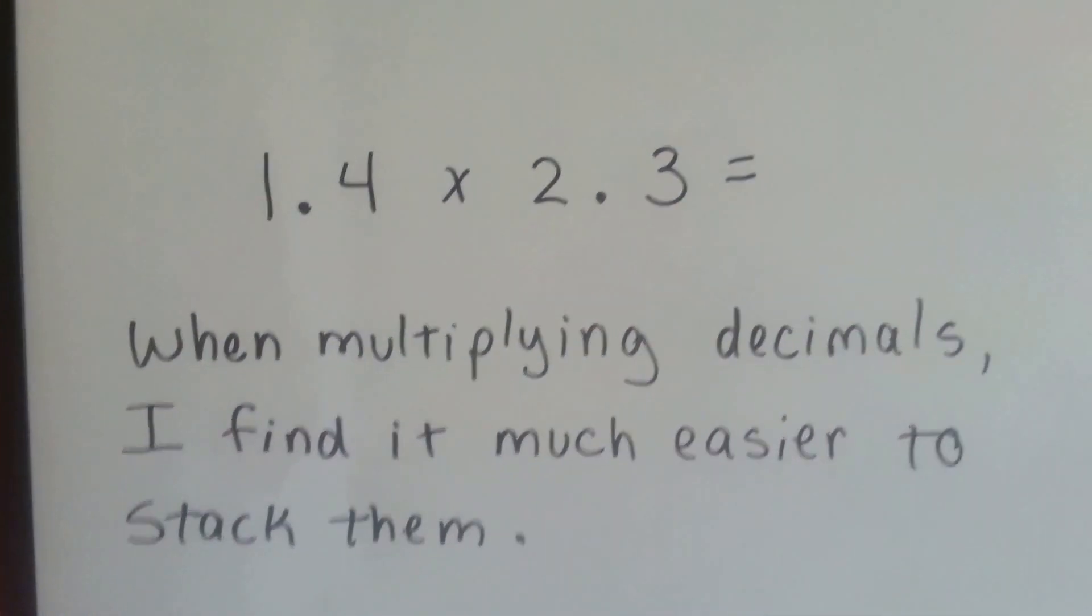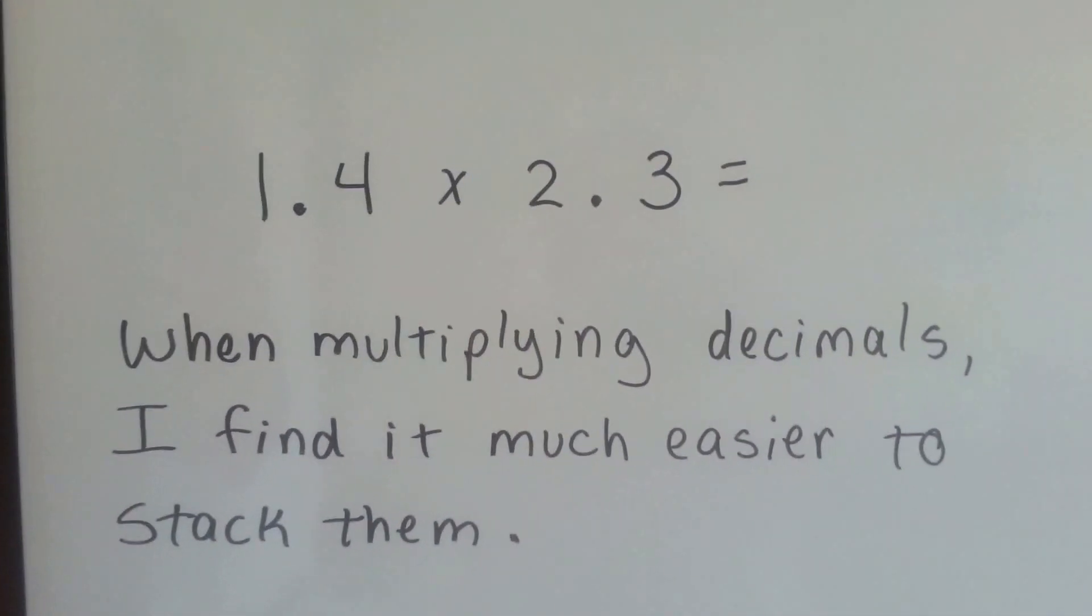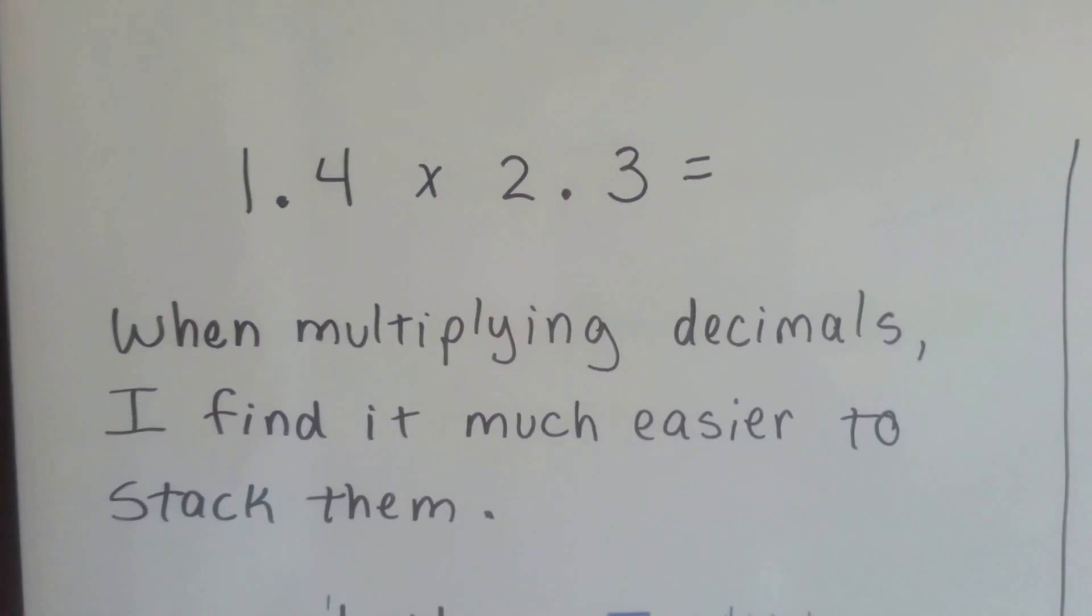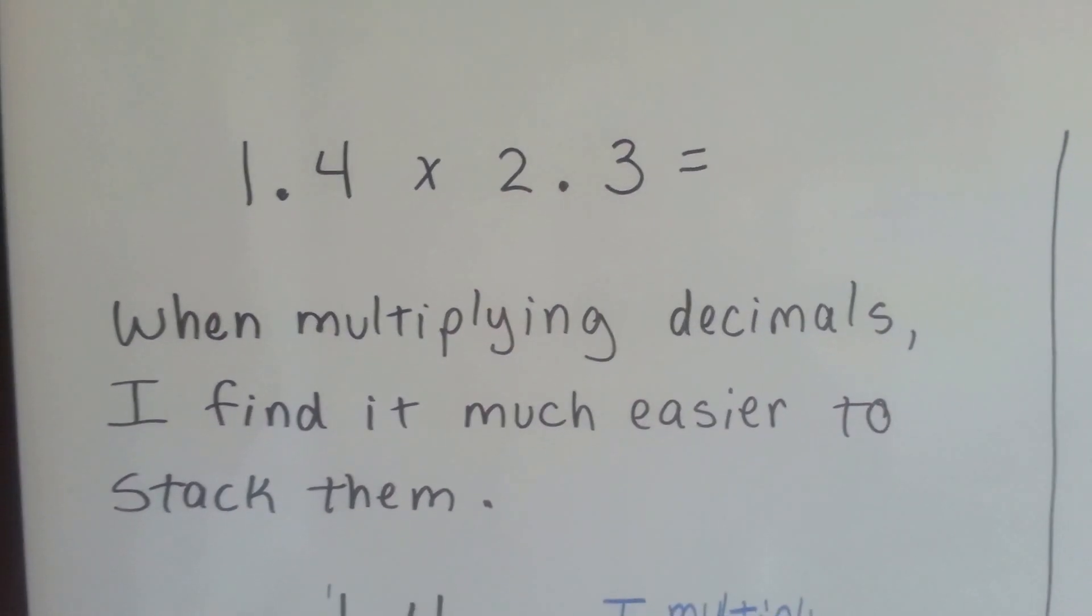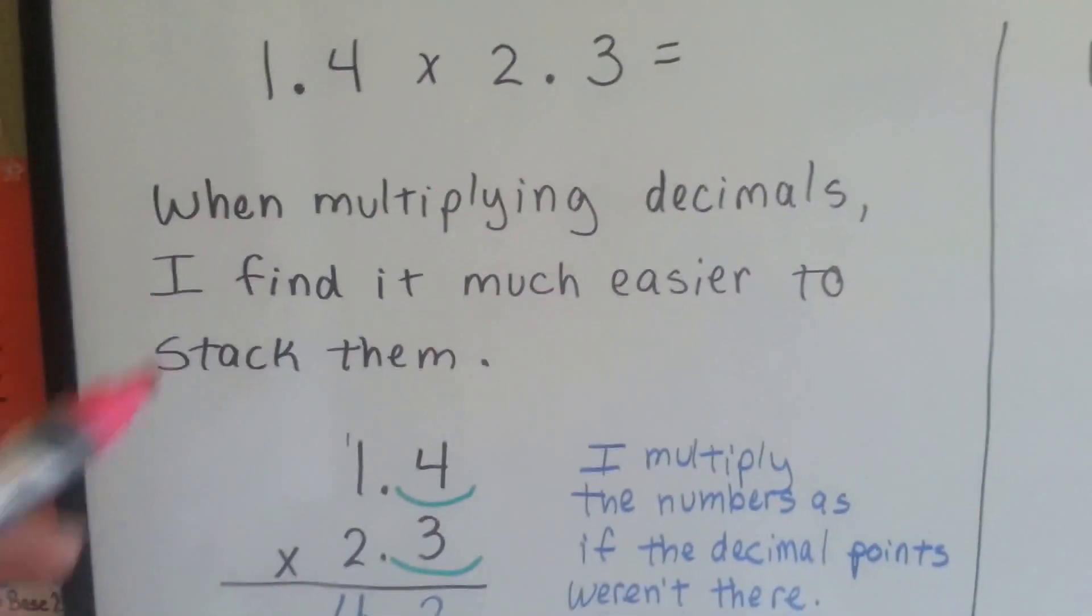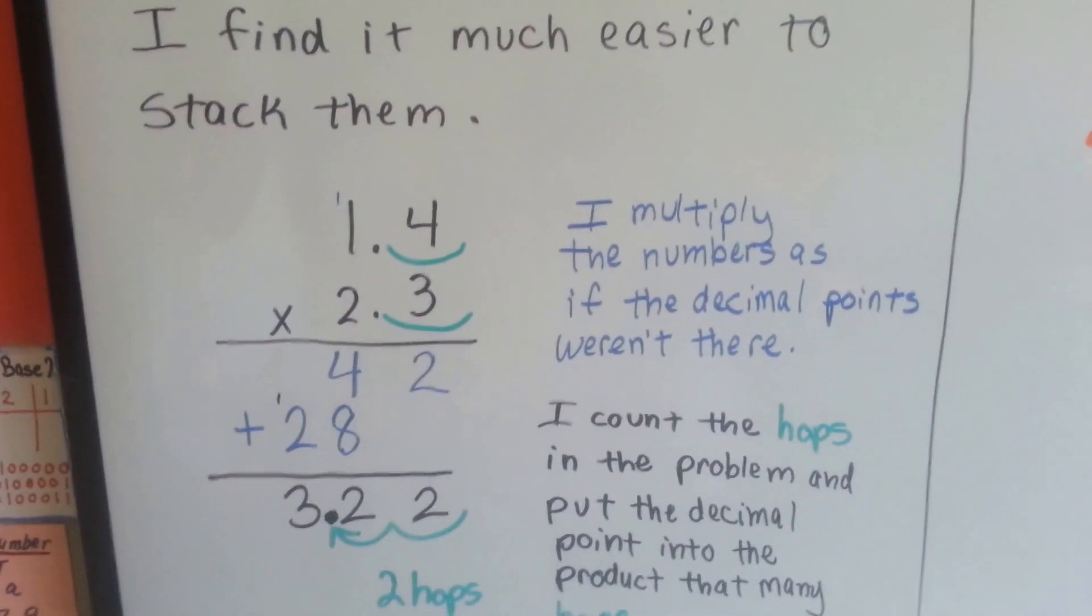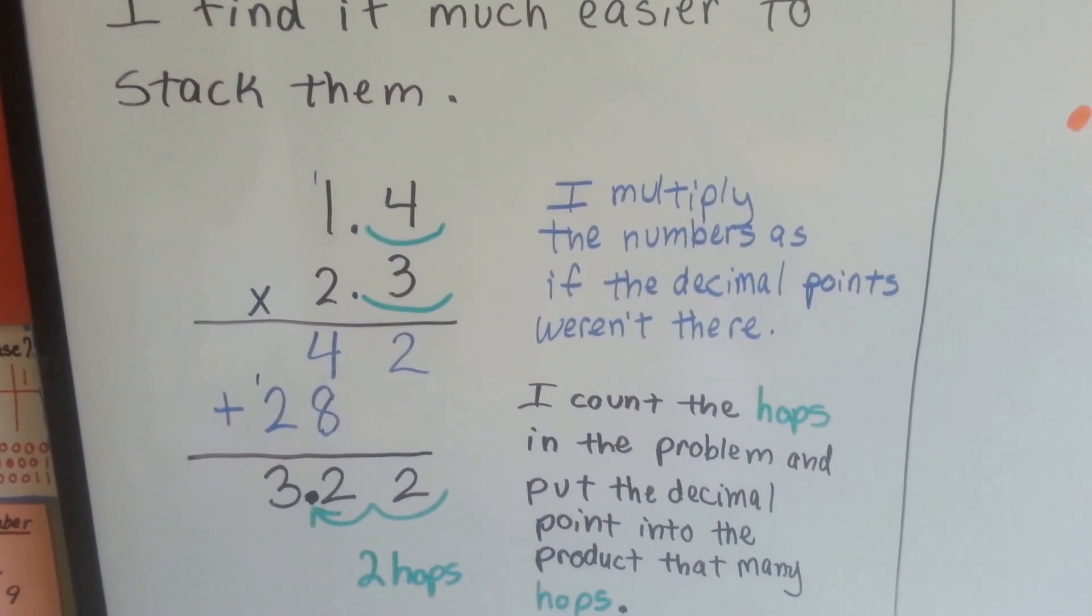If we had 1.4, 1 and 4 tenths, times 2.3, 2 and 3 tenths, when multiplying decimals, it's much easier to stack them. It's a little harder to do it this way. If we stack them, we can multiply as if the decimal points aren't even there.